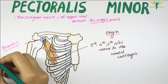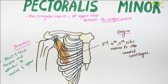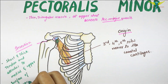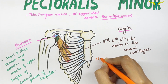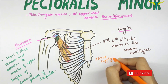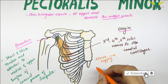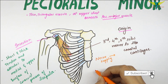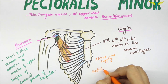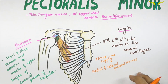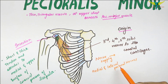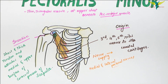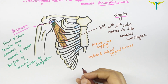The nerve supply of the pectoralis minor is from the medial and lateral pectoral nerves. You can remember this as: the pectoralis is supplied by the pectoral nerve.